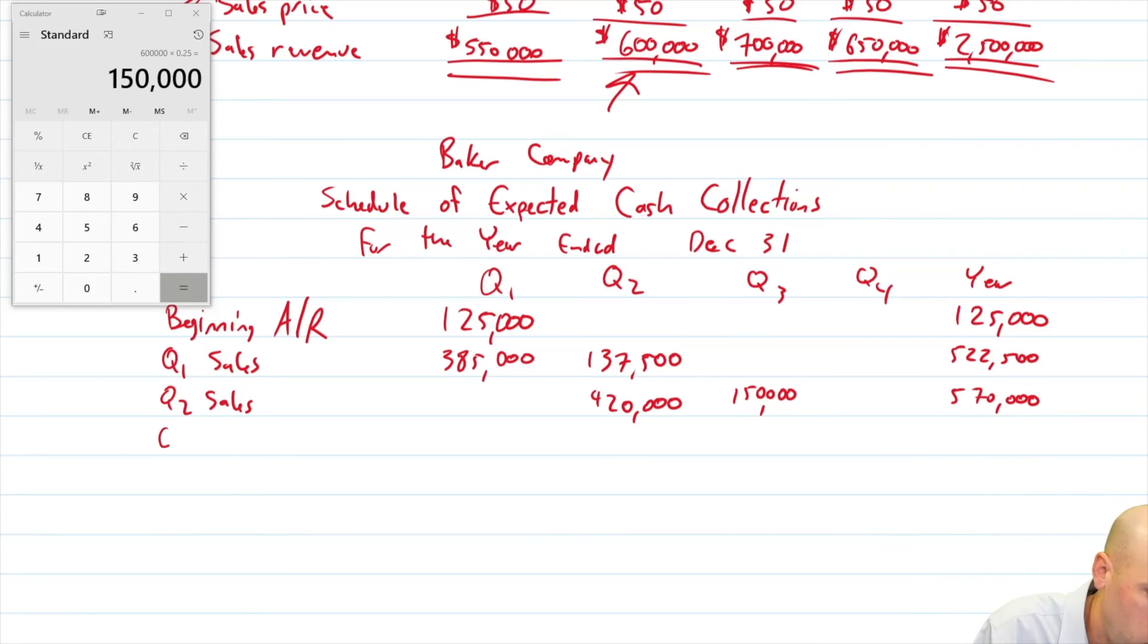Let's move on to quarter three sales. And hopefully you're getting into the rhythm of this now. $700,000 sold in quarter three. We get 70% in quarter three. That's 490. And we get 25% in the following quarter. 25% of 700 is 175. 490 plus 175 gives us our cash collections of quarter three sales for the year. 665,000 out of 700,000. That other 5%, we are anticipating we won't see the money.